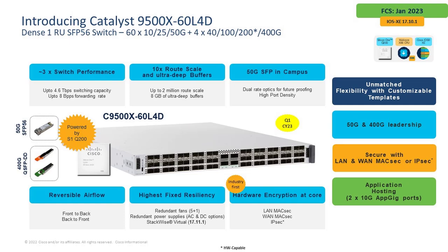Using the 48Y4C — the UADP 3.0-powered SFP form factor box — as a point of reference, we now have a total switching capacity of 4.6 terabits per second, which is almost three times the performance provided by the 48Y4C. This is powered by the Cisco Silicon One Q200 ASIC, so we get very high route scale — up to 2 million routes for IPv4 — and we also have ultra-deep buffers: 8 gigabytes of on-demand ultra-deep buffers to ensure that if there is a mismatch in speeds, the packet gets sent out no matter what.